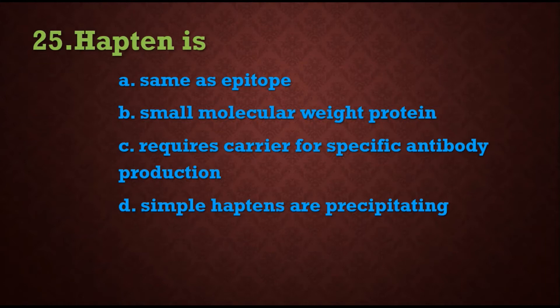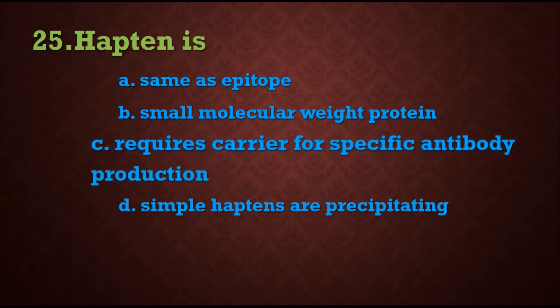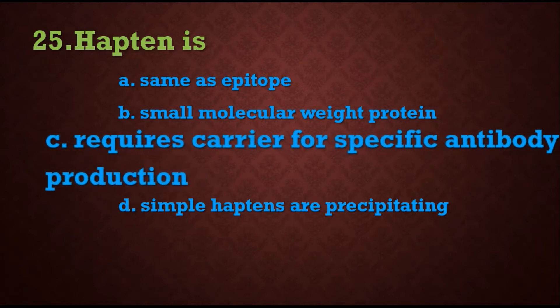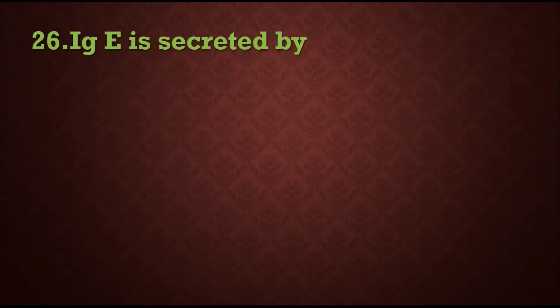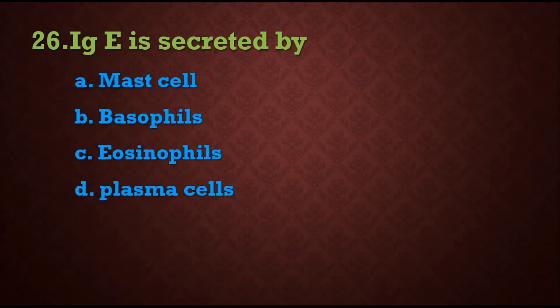Question 25: A hapten is a small molecular weight protein that requires a carrier for specific antibody production. The answer is: requires a carrier for specific antibody production. Question 26: Immunoglobulin E is secreted by — options are: A) mast cell, B) basophil, C) eosinophil, D) plasma cell.